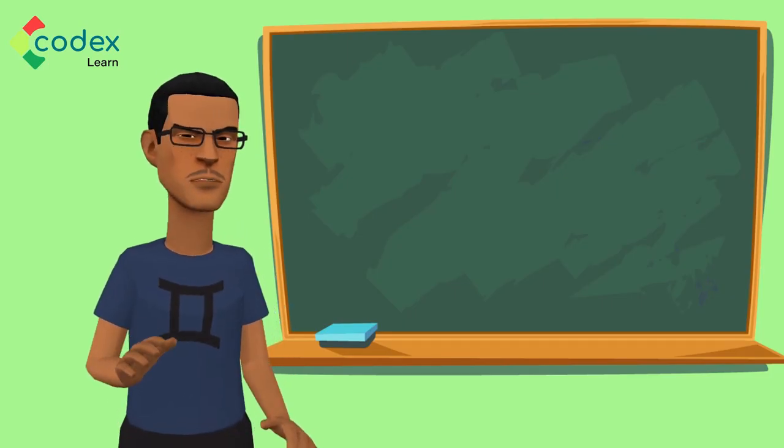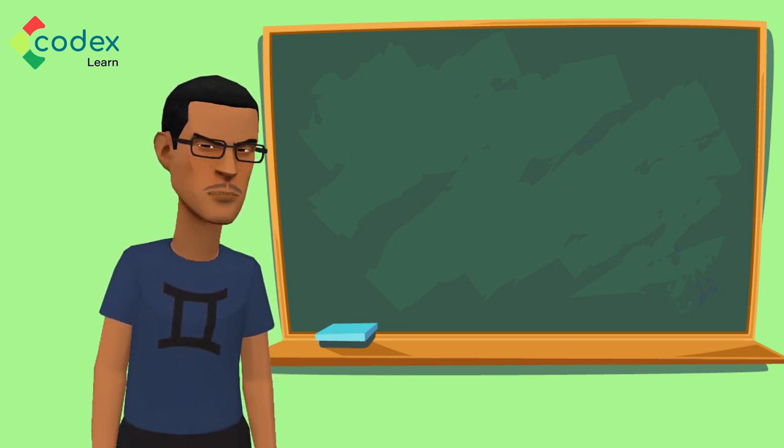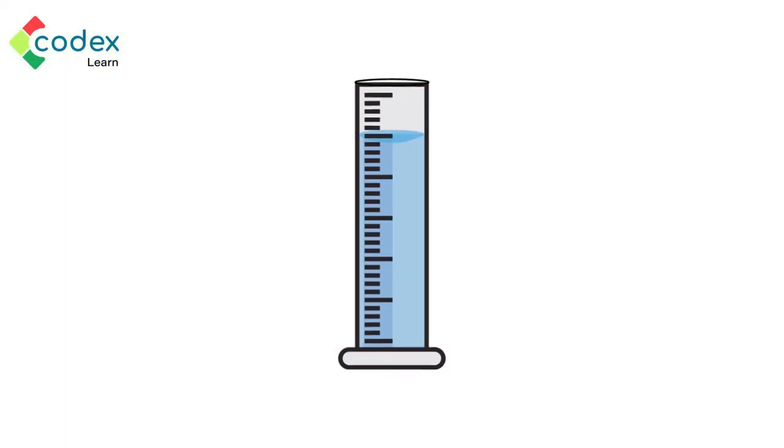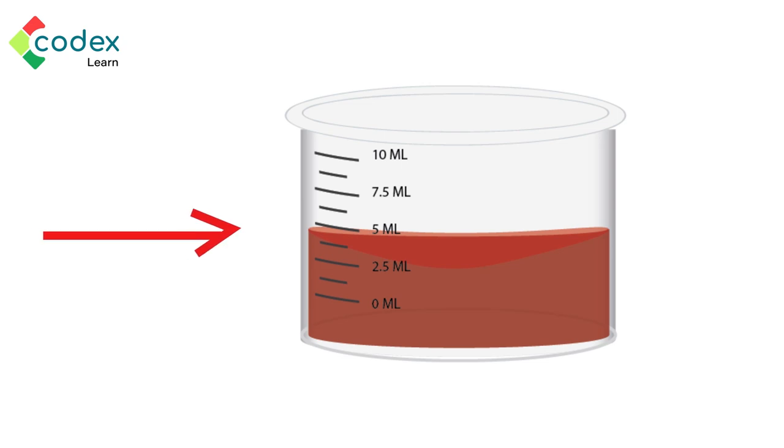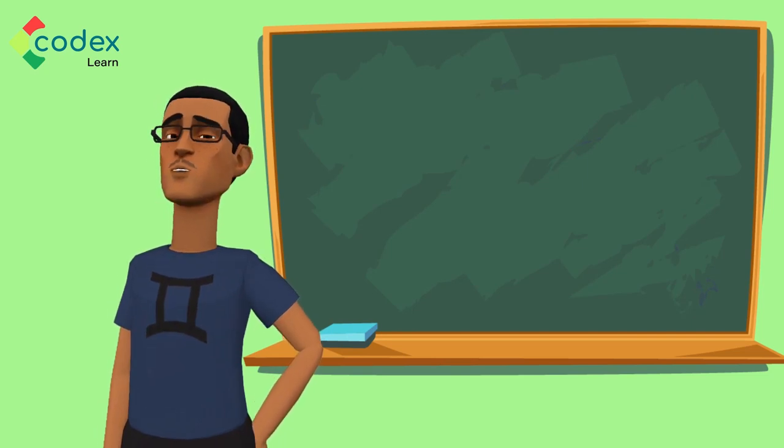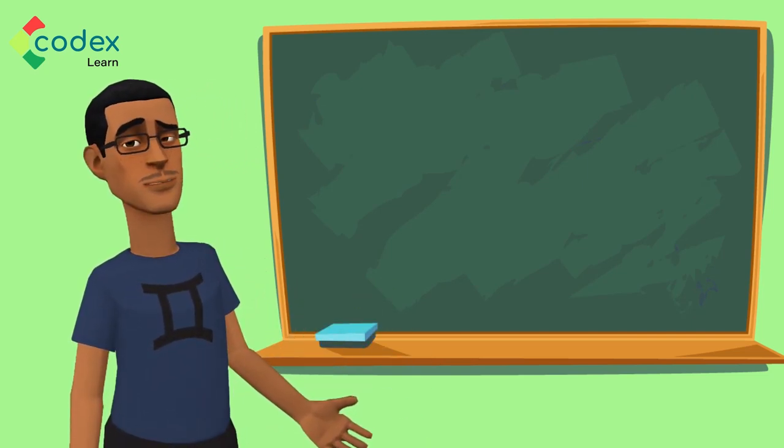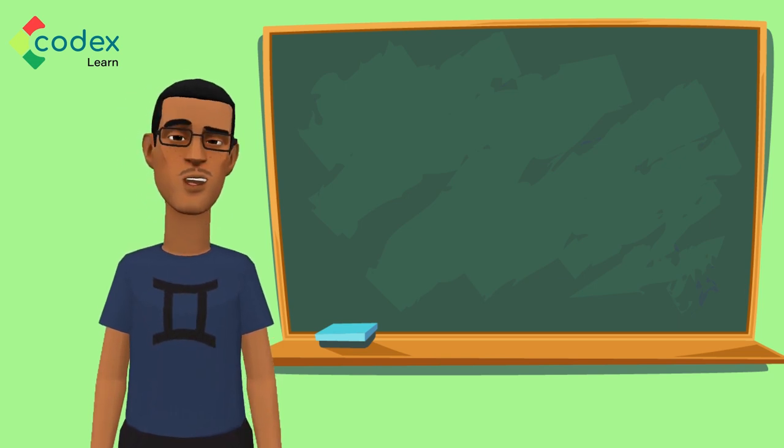Sometimes when measuring liquids, a curve forms at the point of measurement. The bottom of this curve is called a meniscus. Meniscus is spelt M-E-N-I-S-C-U-S. When a liquid forms a meniscus in its container, the meniscus is taken as a measurement of the liquid. The curve at the bottom of my syrup is a meniscus. Even though the edges of the syrup are slightly above 5 ml, the volume of syrup in this calibrated cup is 5 ml because of the position of the meniscus.